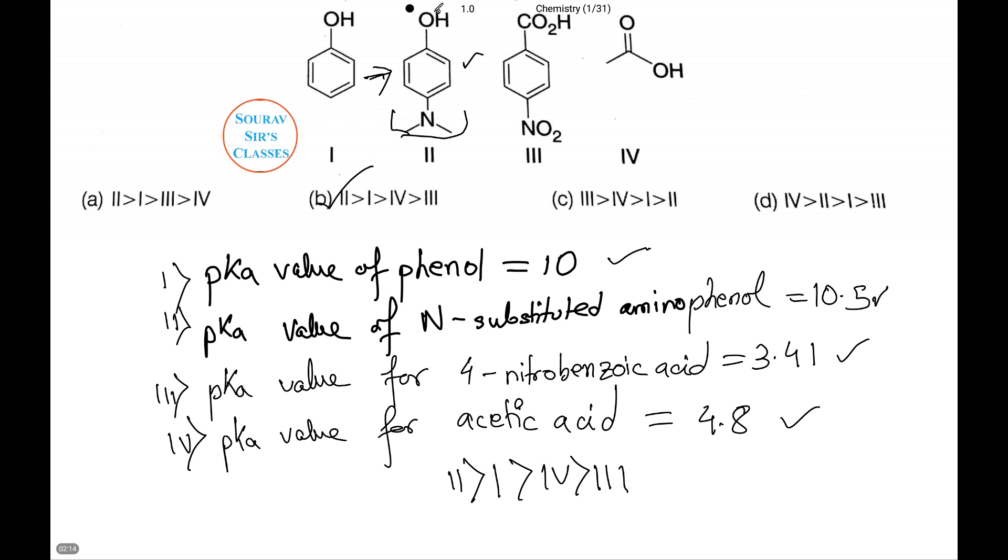In structure 3, nitro and COOH groups are attached to the benzene ring, which are electron-withdrawing groups and decrease the pKa value. Thus its pKa value is less than that of benzoic acid.